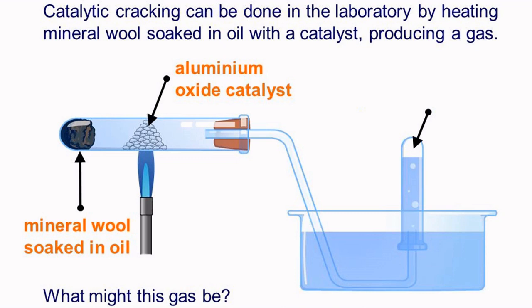The catalyst is heated, giving that hot surface area needed to break the hydrocarbons, and then gently heat the oil soaked wool. The hydrocarbons would evaporate, move over the catalyst, and at this point thermal decomposition will happen and the chains will break. Products will move down the delivery tube and be collected and tested.